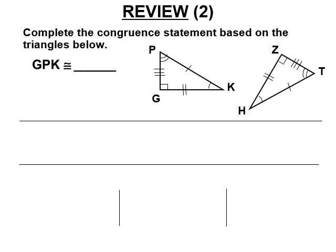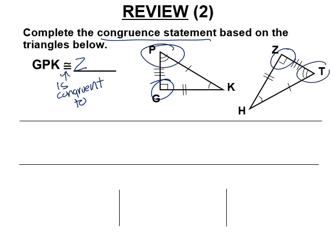The second lesson was about congruence, because transformed objects are usually congruent — except for dilation. Triangle GPK is congruent to — that symbol is an equal sign with a tilde; do not use just an equal sign. You have to go in the same order. Z goes first because G is 90 degrees and Z is 90 degrees; T goes second with two arc marks; H goes last with one arc mark. You must have the letters in the correct order, and the tick marks on sides will match up.